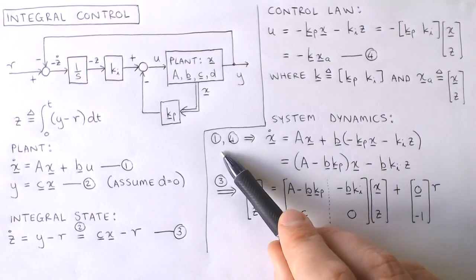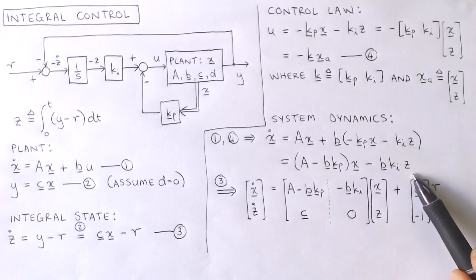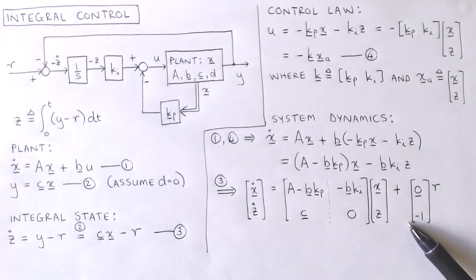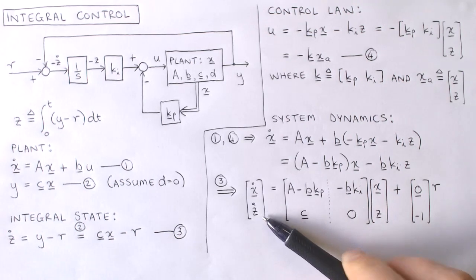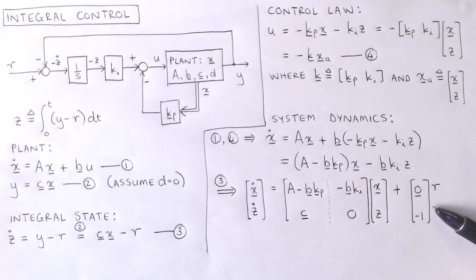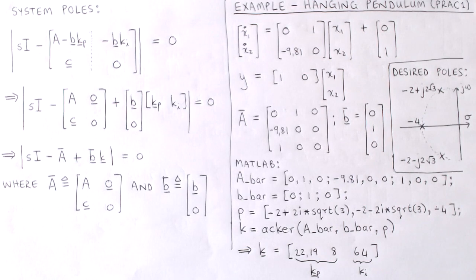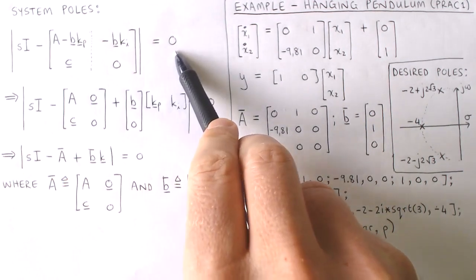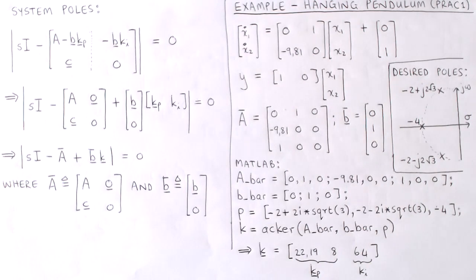The plant state vector with the integral state added is called the augmented state vector, and the combined proportional gain and integral gain is the state feedback for the augmented states. We can now combine the plant, integral state, and control law to describe the dynamics of the full system. By combining equations 1 and 4 we can write x-dot in terms of x and z. By making use of equation 3 we can write the dynamics of the full system as a state variable system, with the input given by r. The new A matrix and new B vector are identified, and we can calculate the poles of the full system as the roots of the characteristic equation given by the determinant of sI minus the new A matrix equal to zero. We calculate this determinant as a polynomial in s, set up the desired characteristic polynomial by specifying the desired pole locations, and solve for the elements of kp and ki by comparing coefficients.